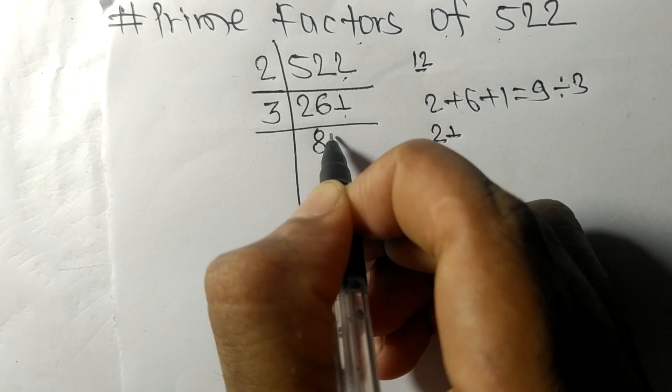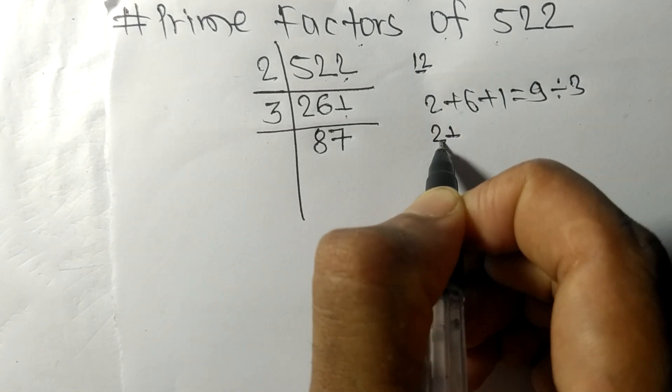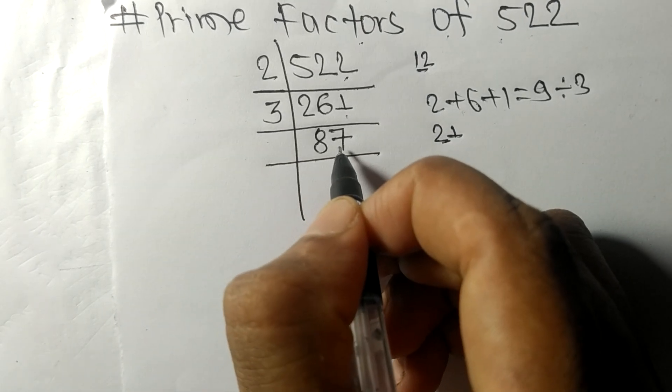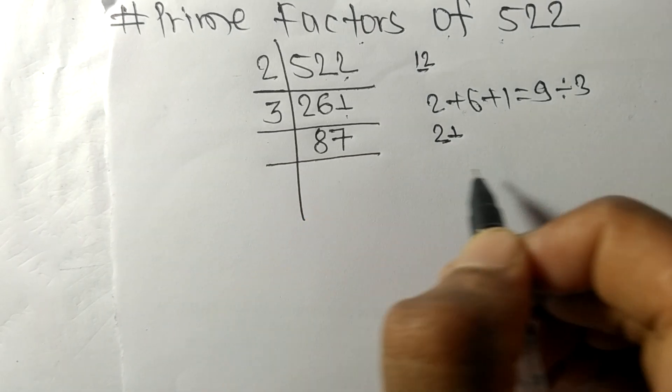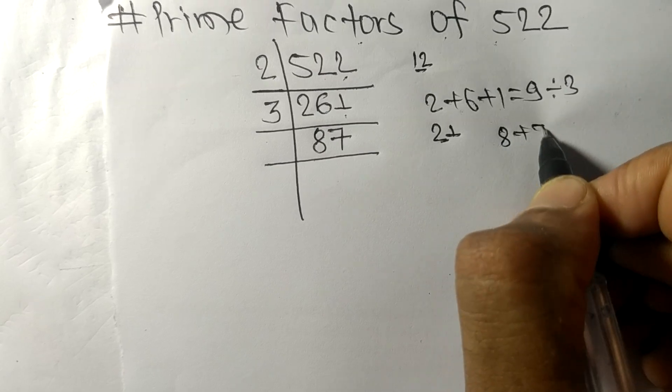And this one, 21, 3 times 7 means 21. So now we got 87, and when we add 8 plus 7, then we get 15.